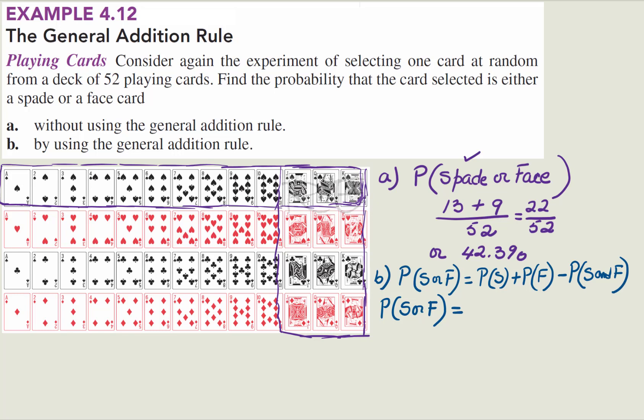Now P of S will be equal to the number of spades, 13, divided by the number of cards in the deck, 52, plus P of F, which is the number of face cards, 12, divided by 52. And P of S and F is the intersection, the overlap. So it's 3 over 52 minus 3 over 52. The answer is 22 over 52, which is equal to 42.3%.